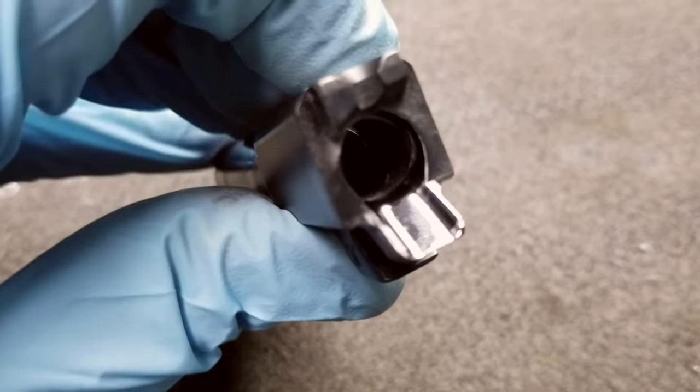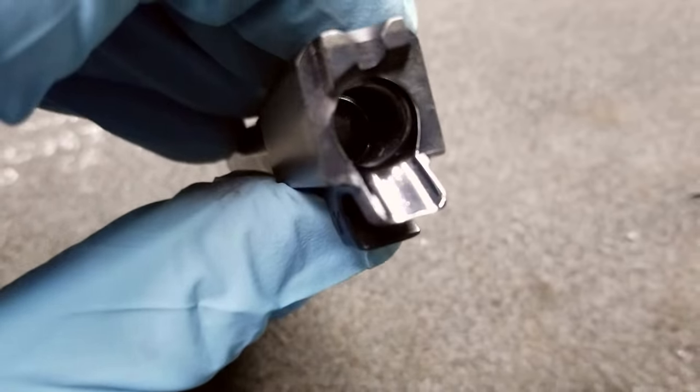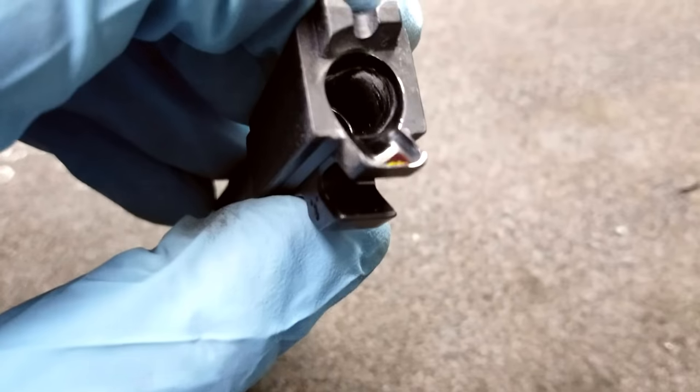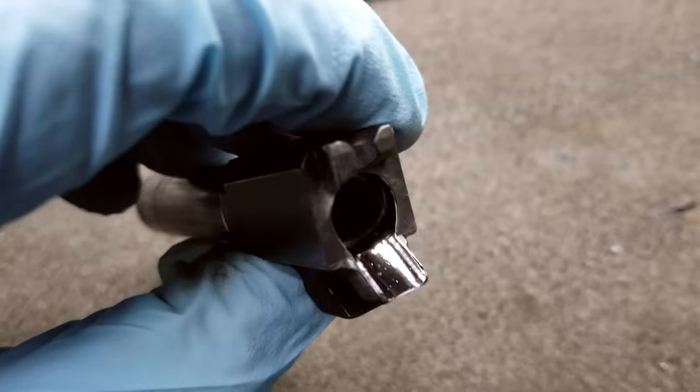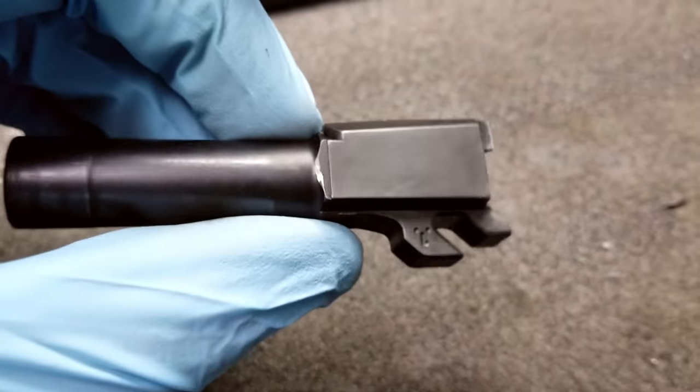The last thing you're going to do is get a clean patch and run it through your barrel just to get rid of all that polishing compound that's stuck on the inside of our chamber from polishing. Then you're just going to re-oil your barrel, lube it up, and reassemble into your gun. That's it, you're done.